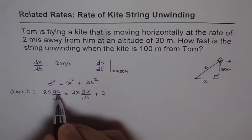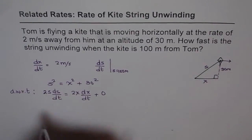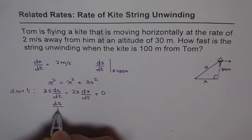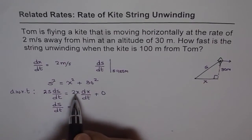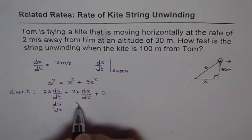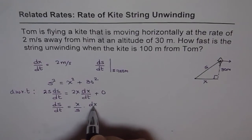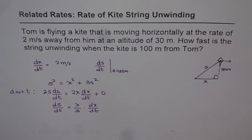And you need to find out what is rate of change of string length. So we have ds/dt equals, divide 2x by 2s, we get (x/s) times dx/dt.